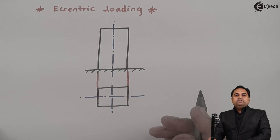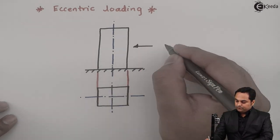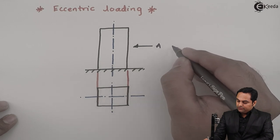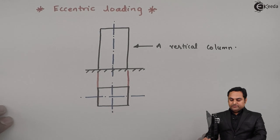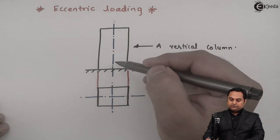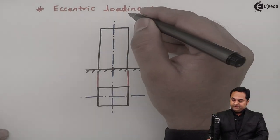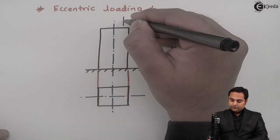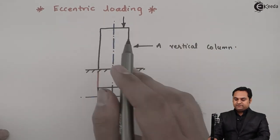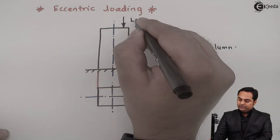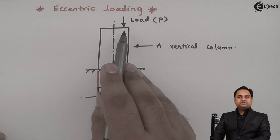To understand eccentric loading, here we have a vertical column. This is the axis of the column. Eccentric loading means a load which is acting away from the axis. There is a load which is denoted by P acting away from the axis.